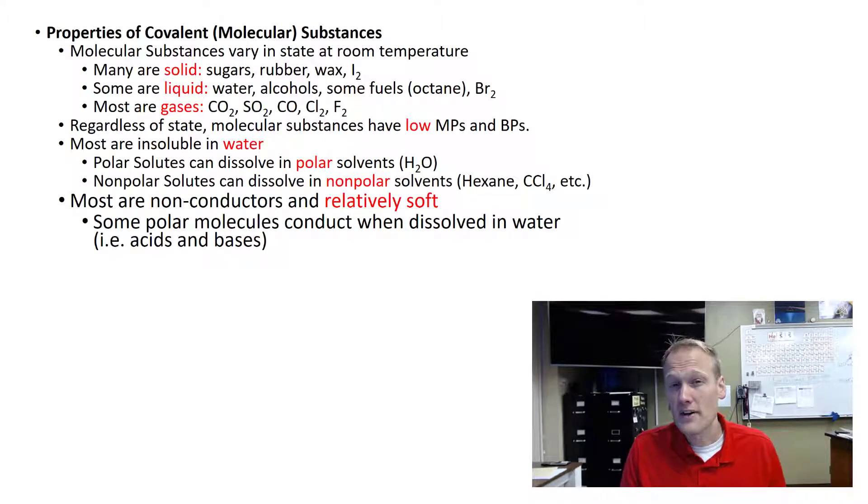The next thing we're going to cover here is some properties of molecular substances. So we've been talking about molecules for a long time now. How do those molecules, those covalently bonded structures, compare to ionically bonded structures? Molecules can be any different phase. We have some that are solid, we have some that are liquid, and some that are gases. Solids include sugars and waxes, liquids can be like water or alcohol, and then the gases like CO2 or O2 or chlorine gas are all examples.